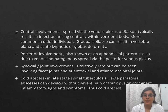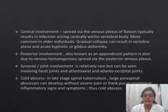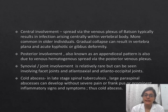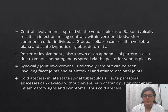Posterior involvement, also known as the appendicular pattern, is also due to venous hematogenous spread by the posterior venous plexus. Synovial joint involvement is relatively rare but can be seen involving the facet joint and atlanto-axial and atlanto-occipital joints. In the late stage of spinal tuberculosis, large paraspinal abscess can develop without severe pain, frank pus, or prominent inflammatory sinus symptoms — thus we call this a cold abscess.